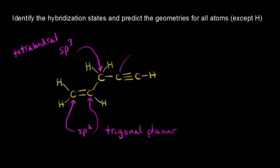Let's move over to this carbon right here. This carbon has a triple bond on the right side of it. The fast way of doing this is if it has a triple bond, it must be sp hybridized. Therefore, the geometry would be linear with a bond angle of 180 degrees. Same with this carbon — it also has a triple bond, so it must be sp hybridized with linear geometry. That's why I drew it this way; it's linear around those two carbons.